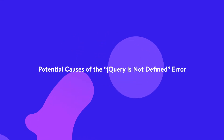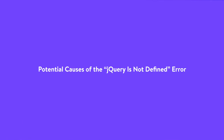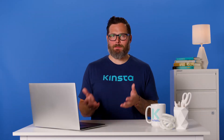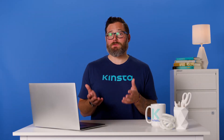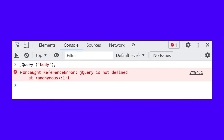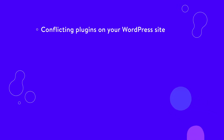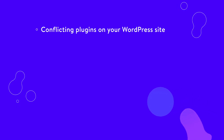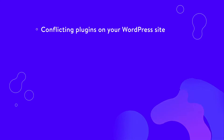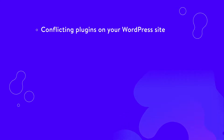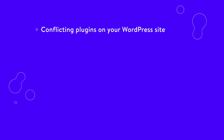This error can be quite a surprise — your site was working just fine yesterday. There are a few possible things that could have occurred that threw the jQuery is not defined error. First, old plugins installed on your WordPress site are conflicting with ones that you installed and activated more recently. If you recently installed or activated new plugins, or some of the plugins on your site have not been updated recently, this may be the cause.